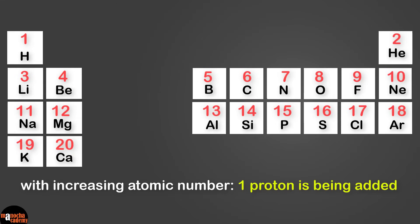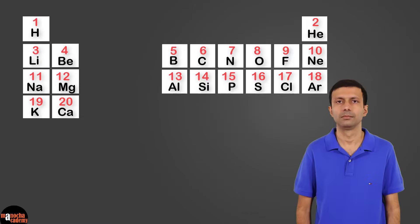Now, how is the electron number changing? That's right, the electrons are also increasing by 1. Because remember, an atom is neutral - it has equal number of protons and electrons. Note that we are not concerned about the number of neutrons right now.